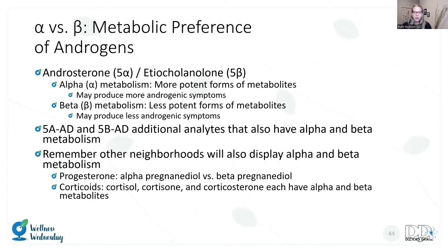In the androgen section, we're looking at 5-alpha and 5-beta metabolism: androsterone represents the 5-alpha pathway, and etiocholanolone represents the 5-beta pathway. The alpha pathway generally produces more androgenic symptoms, while the beta pathway produces less. There are a couple of smaller metabolites that can back up your story about alpha versus beta metabolism. Utilizing other neighborhoods gives you the totality of that 5-alpha influence.